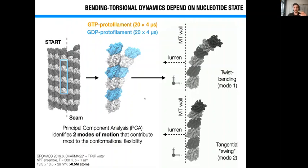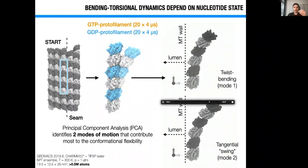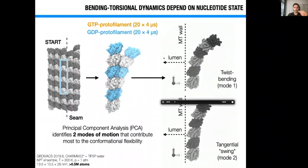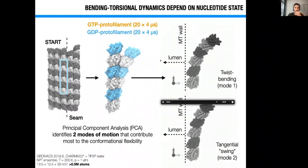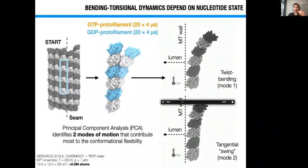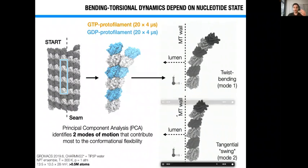Now, due to the stochastic nature of these simulations, they, of course, contain both slow conformational changes, which are of interest for us, and fast thermal vibrations. And therefore, we use the principal component analysis to extract those degrees of freedom that contribute most to the total atomic displacement in our simulations, which is shown here on the right. It turned out that only two modes are fully sufficient to account for more than 90% of the conformational dynamics in our protofilament simulations, with the first mode being a twist-bending motion with a non-radial component, and with the second mode being a sort of tangential motion of the protofilament perpendicular to the radial plane of the microtubule. And we call this motion, sort of tangential swing.